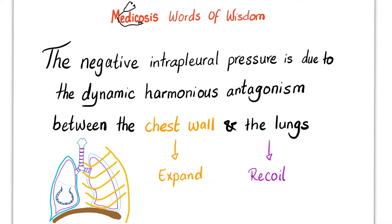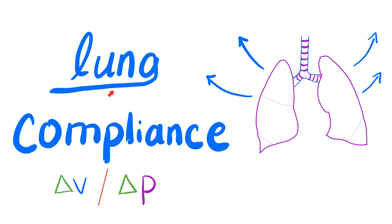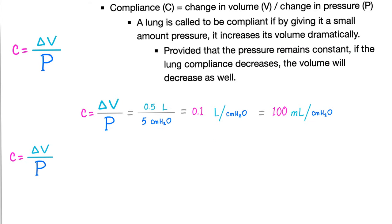The negative intra-pleural pressure is due to the dynamic, harmonious antagonism between the chest wall — which wants to expand outwards — and the lungs — which want to collapse inwards. Let's talk about lung compliance, which is change in volume over change in pressure (ΔV/ΔP). The opposite is elastance: change in pressure over change in volume (ΔP/ΔV).